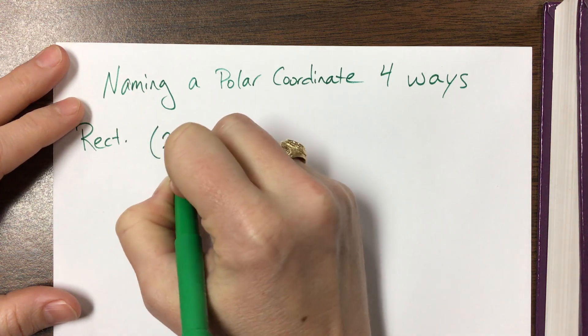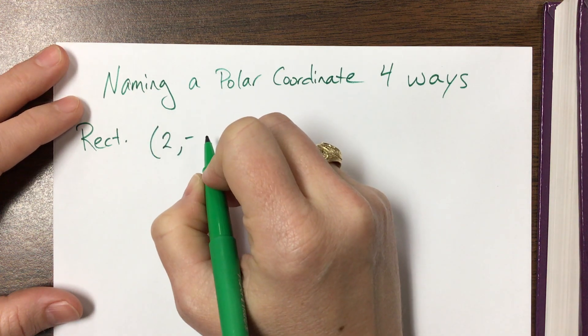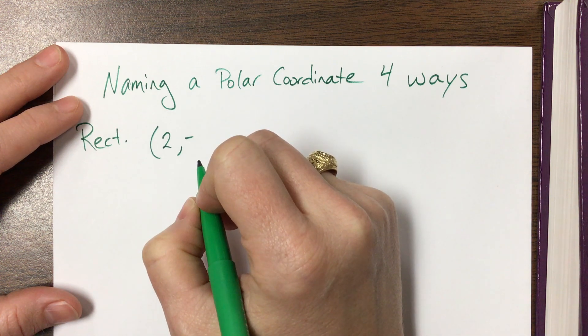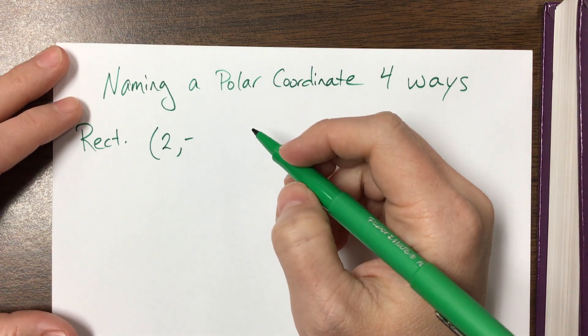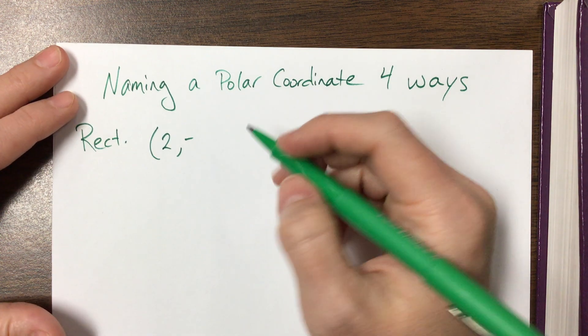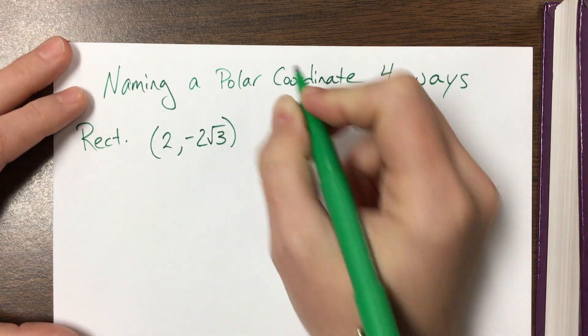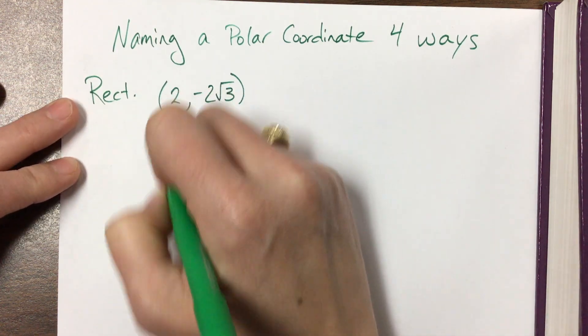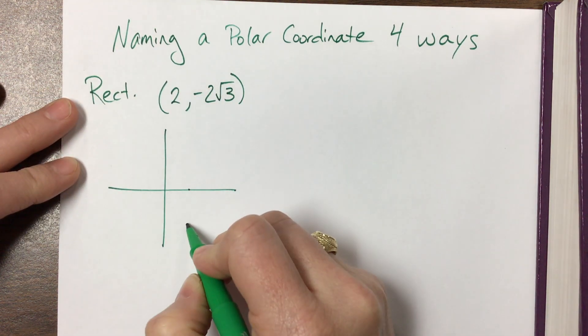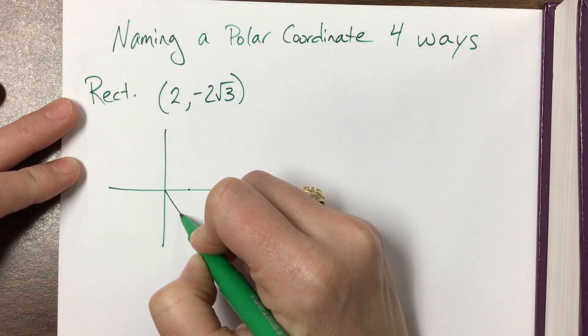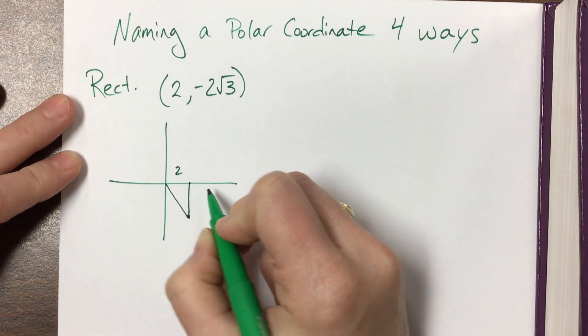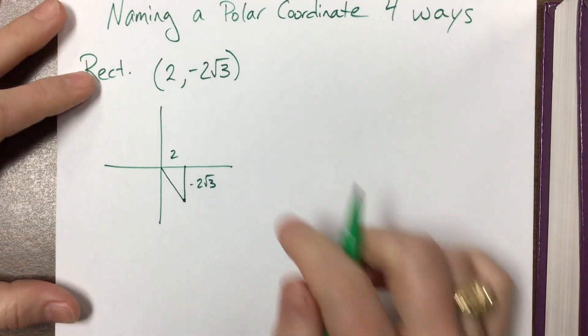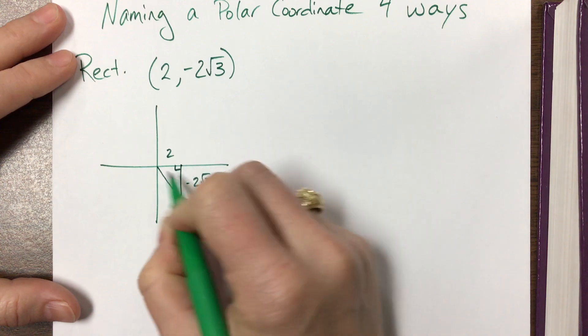the point 2, negative... hang on, let me think just a second... and now it's negative 2 root 3. Okay, if that's the rectangular point - I'm sorry I should have picked one ahead of time - we know that this is in quadrant 4. We've got over 2 and down to root 3. This is 2, this is negative 2 root 3.